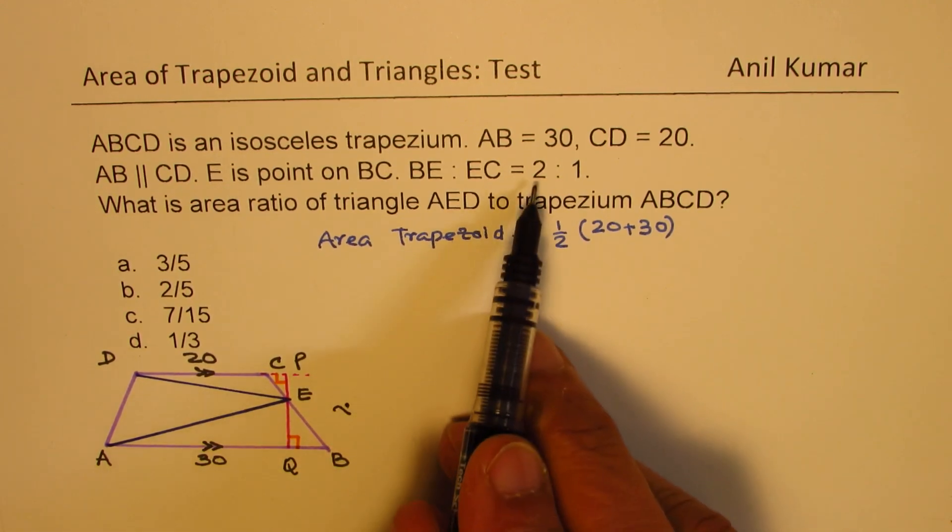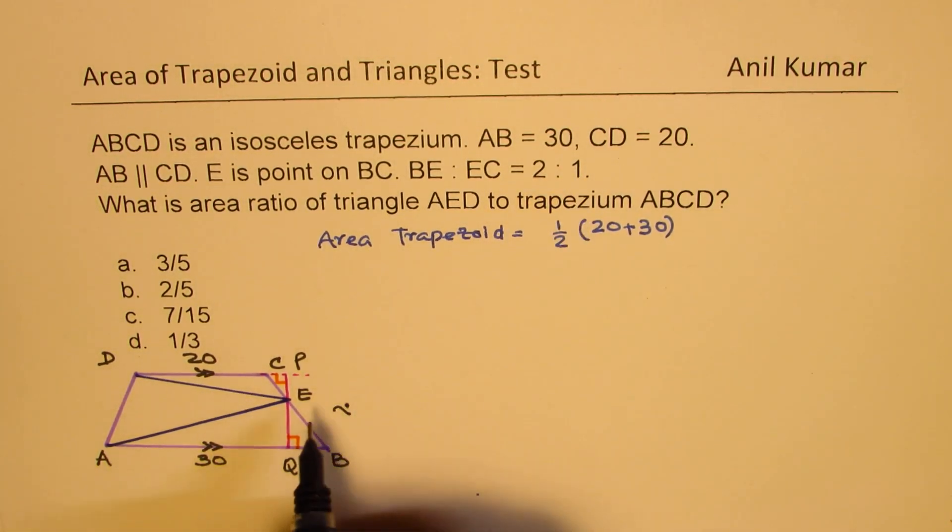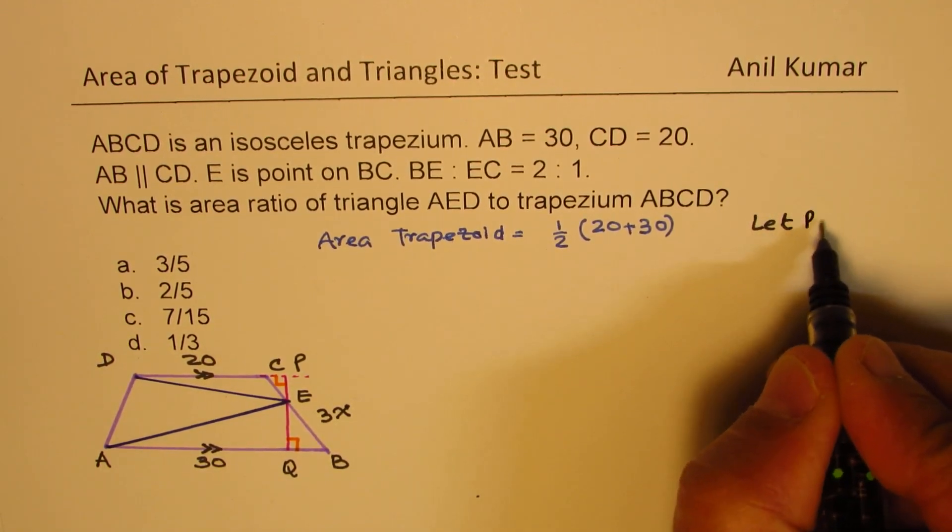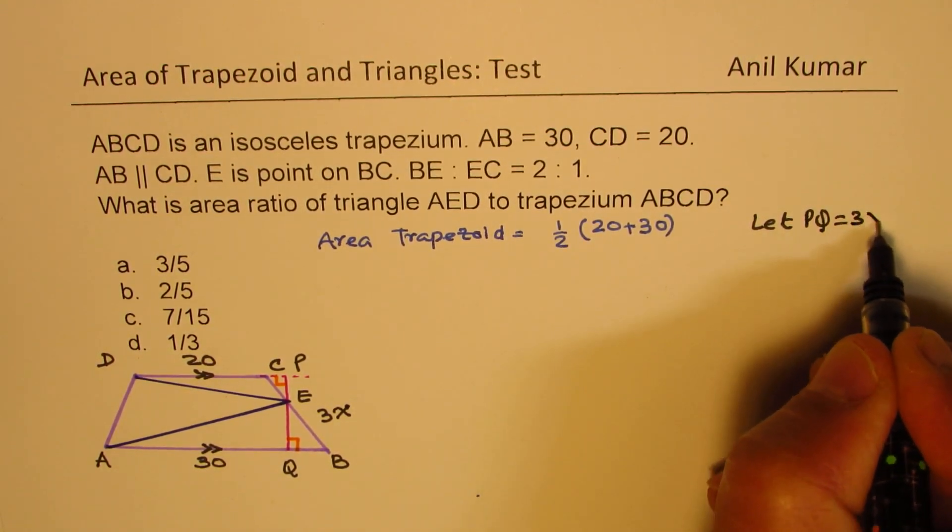So let us say that this particular length from the point, let us say P to Q, is X. Rather, we have 2 is to 3, so we'll say let it be 3X. That makes sense. So if I assume that PQ, we are saying let PQ equals to 3X.